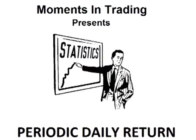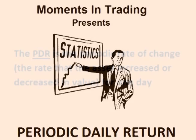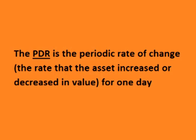Hello and welcome. This video is on finding the periodic daily return of an asset. The periodic daily return is the rate that the asset changes in price or value each day. The periodic daily return, or PDR, is different than the simple percentage that most people are used to using.